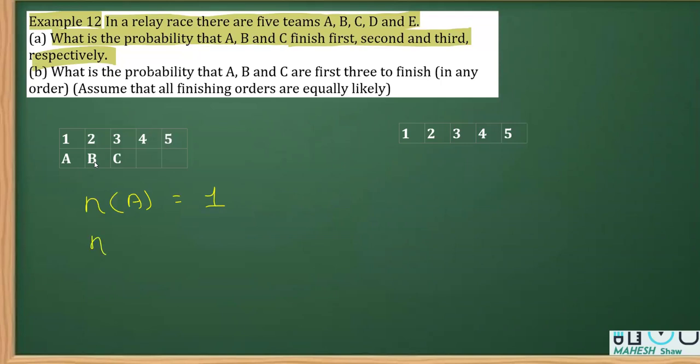Now for the sample space, the first place can be occupied by any of the five teams, so 5 ways. The second place can be filled in 4 ways, and the third place in 3 ways. We don't consider the fourth and fifth positions since we only care about the first three places. Using the fundamental theorem of counting, the number of sample points is 5 × 4 × 3 = 60.